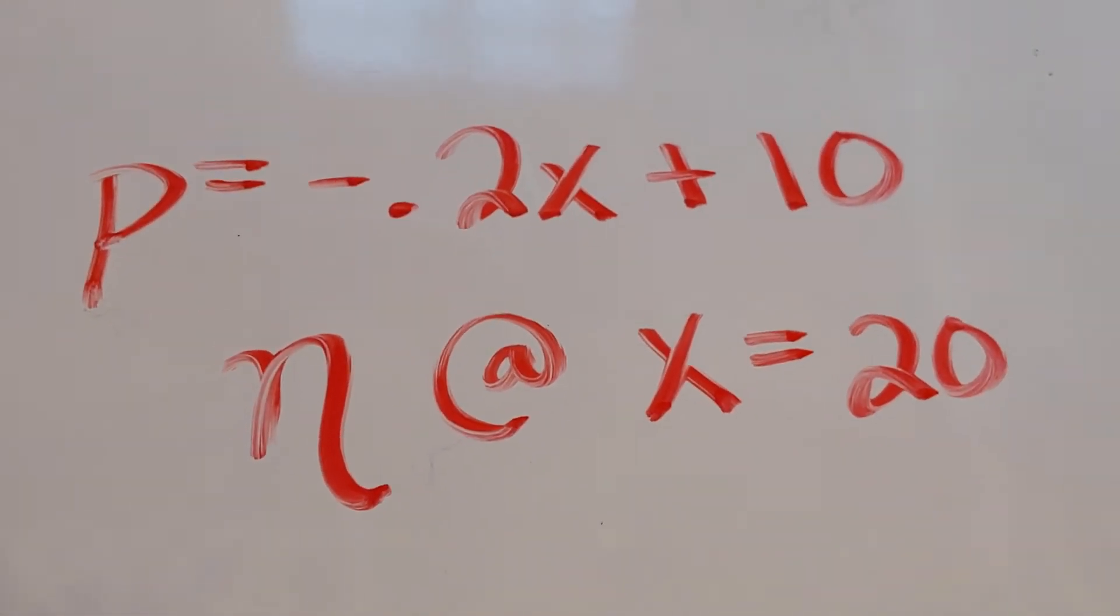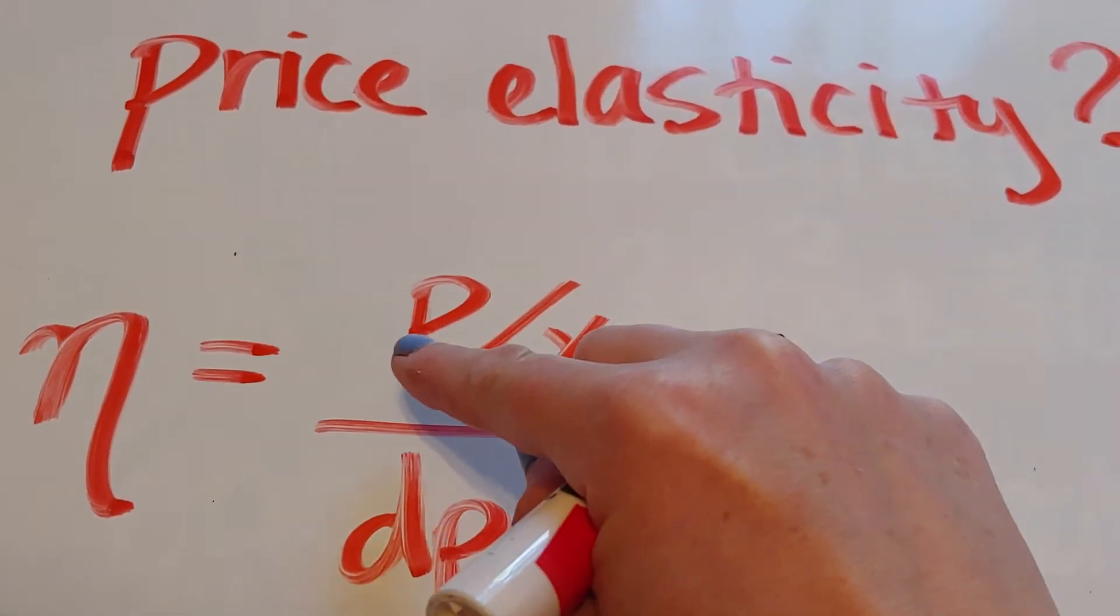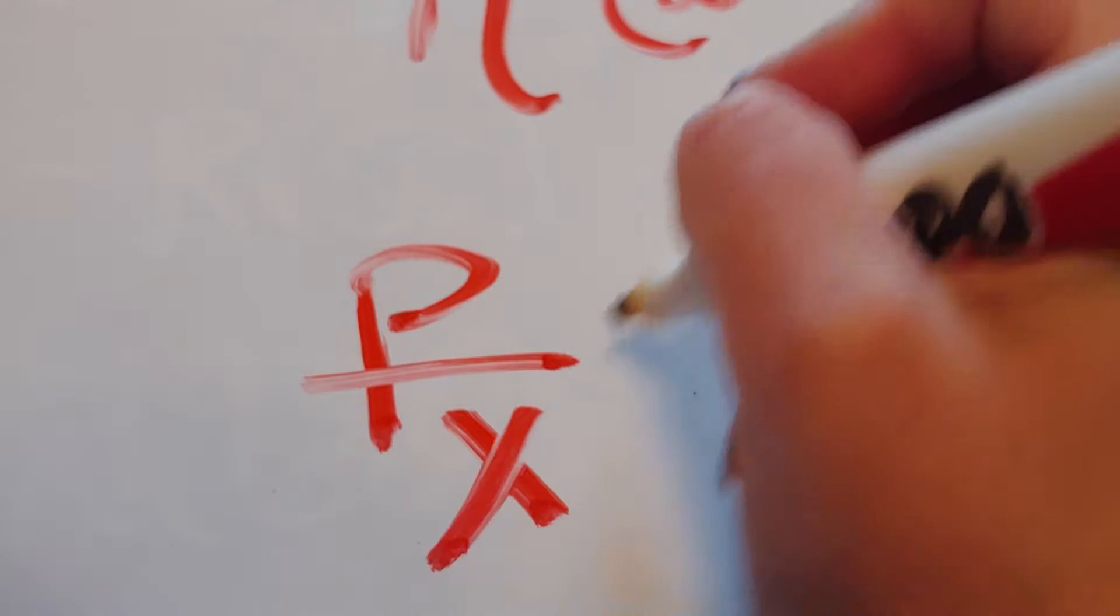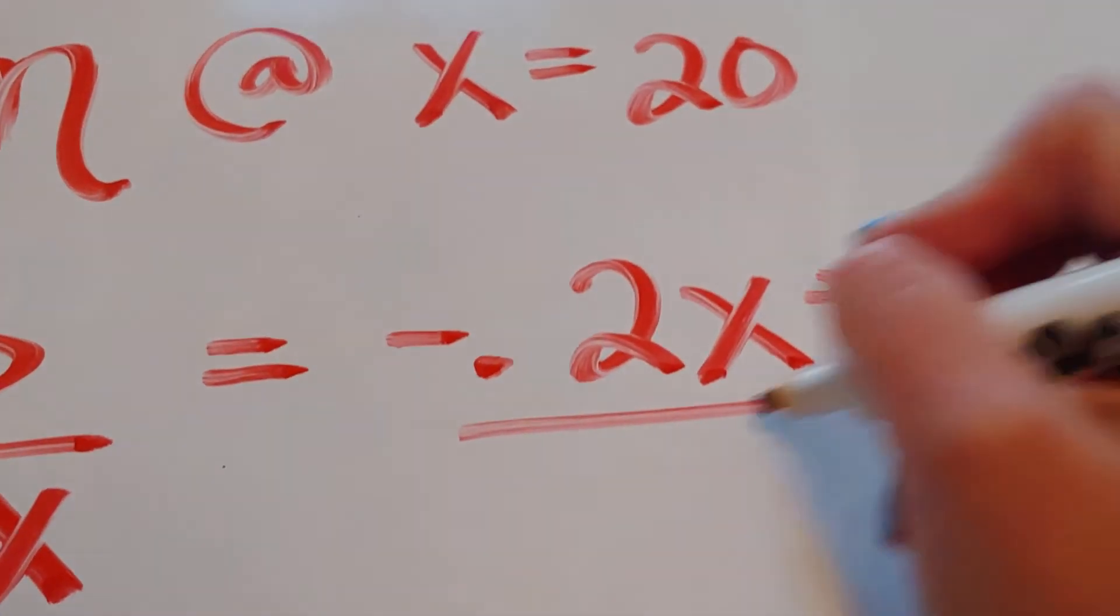Alright. So the very first step that I want to do is when I look over at this equation, the top is the demand function divided by x. So let's figure out what that is. The demand function divided by x would be negative 0.2x plus 10 all over x.